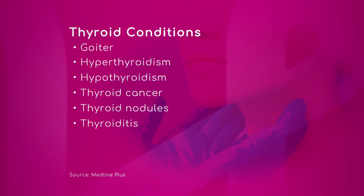Let's next go to hyperthyroidism. Hyperthyroidism is a condition where the thyroid is overproducing thyroid hormone. The pituitary reads this as an overproduction and suppresses the TSH in the blood.